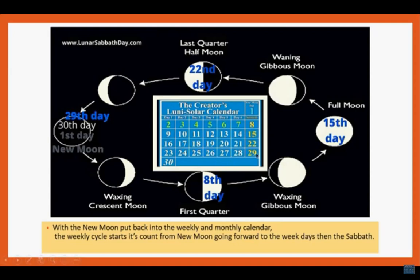The calendar starts over on the left with the first day of the new moon. Seven days later we have the full moon, then seven days later the third quarter — a half moon visible in the morning hours. As it wanes further, we go back to the new moon again, completing the 30th day, and then the cycle begins again. With the new moon put back into its weekly cycle and monthly calendar, the week cycle starts its count from the new moon going forward to the weekdays, then the Sabbath.